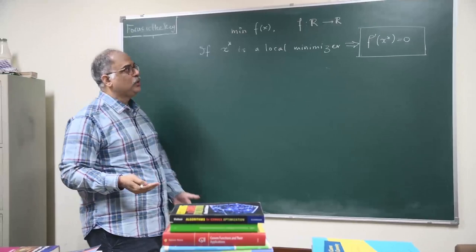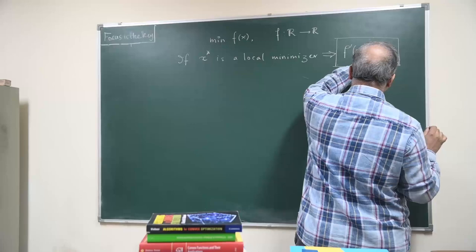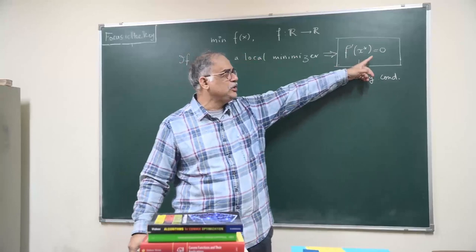with which people actually try to make optimization equivalent to this whole thing, but this actually is a necessary condition. So if something is a minimizer, then f'(x*) must be equal to zero. If x star is a local minimizer, then f'(x*) would be equal to zero. It is not a sufficient condition. Anything that satisfies this need not be the local minimizer.